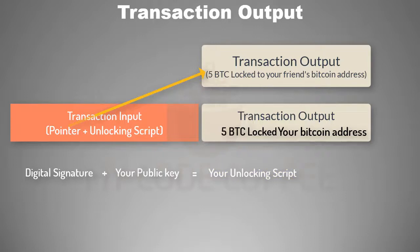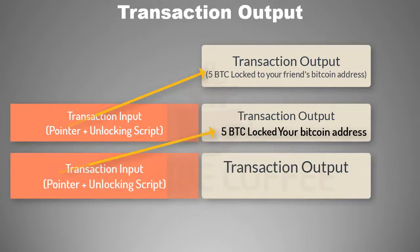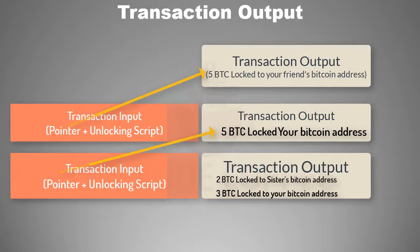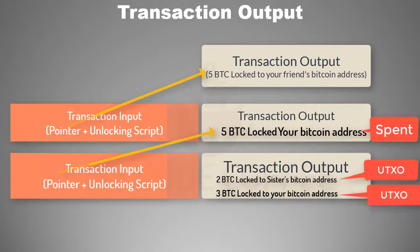Suppose you want to give two bitcoins to your sister. Remember that a transaction output is an indivisible chunk, so you must spend it in its entirety. You will create two transaction outputs: one with two bitcoins bound to your sister's Bitcoin address, and another with three bitcoins bound to your own Bitcoin address. In this way you spend the entire five bitcoin output but still own three bitcoins.